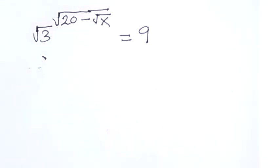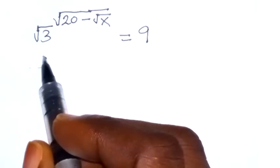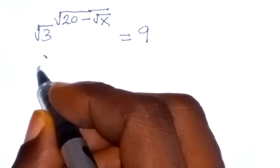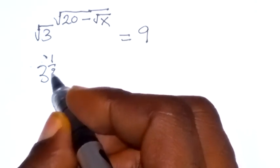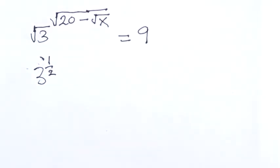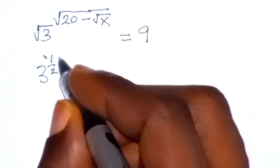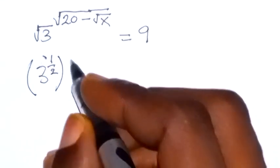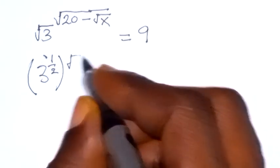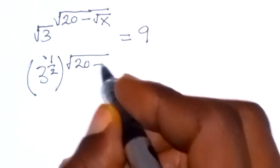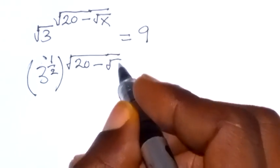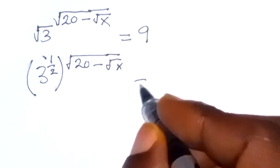Good day! How to solve this problem? Here we can write root 3 as the same thing as 3 raised to power half. From the law of indices, then raised to power root 20 minus root x, which is equals to 9.